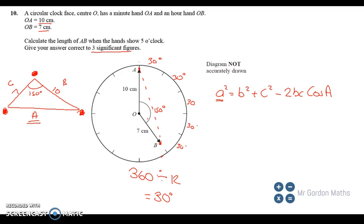Right then, so a squared equals b, or side b is 10, so that's 10 squared, plus side c, which I've labelled over here, 7, 7 squared, minus 2 lots of b times c. So let me just think, b was 10, and c was 7.